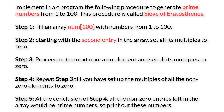There are five steps. First, fill an array num of 100 with numbers from 1 to 100. Second, starting with the second entry in the array, set all its multiples to zero. Third, proceed to the next non-zero element and set all its multiples to zero. Fourth, repeat step 3 until you have set the multiples of all non-zero elements to zero. Fifth, at the conclusion of step 4, all the non-zero entries left in the array are prime numbers — print them out.